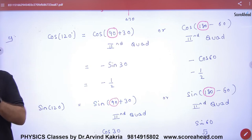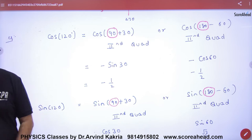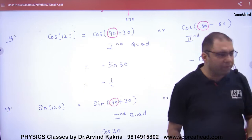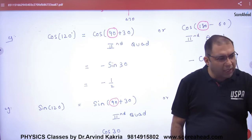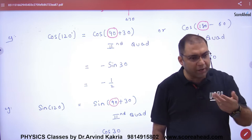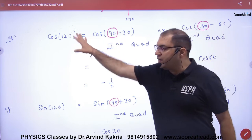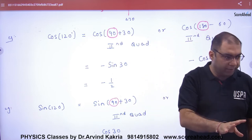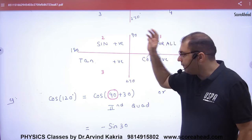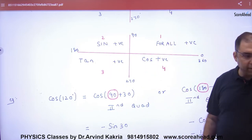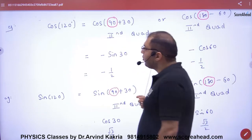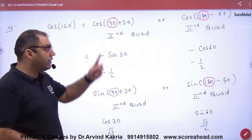Imagine I have to find the value of cos(120). I have told you to remember this value as minus half. But how does it become minus half? You have to break the angle of 120, and write it in terms of a standard angle — either 90, 180, 270, 0, or 360. So I write cos(120) as cos(90 + 30).